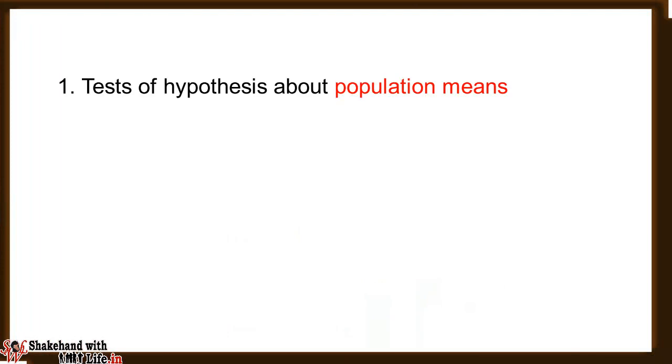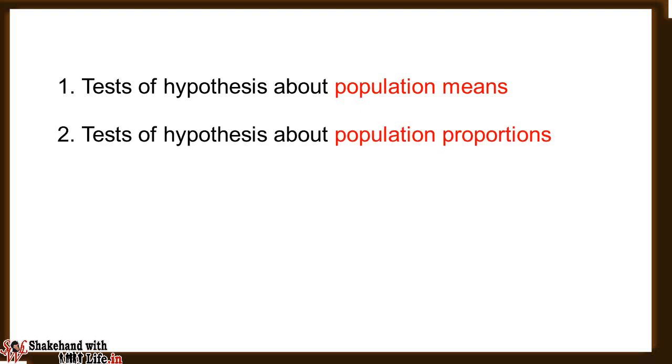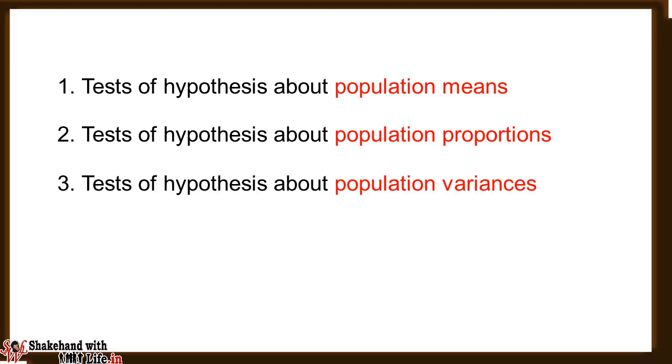Hello everyone, welcome to Shake Hand with Life YouTube channel. I am Narendra Sharma. For testing a hypothesis, there are three common types of hypothesis tests: the first is tests of hypothesis about population means, the second is tests of hypothesis about population proportions, and the third is tests of hypothesis about population variances.